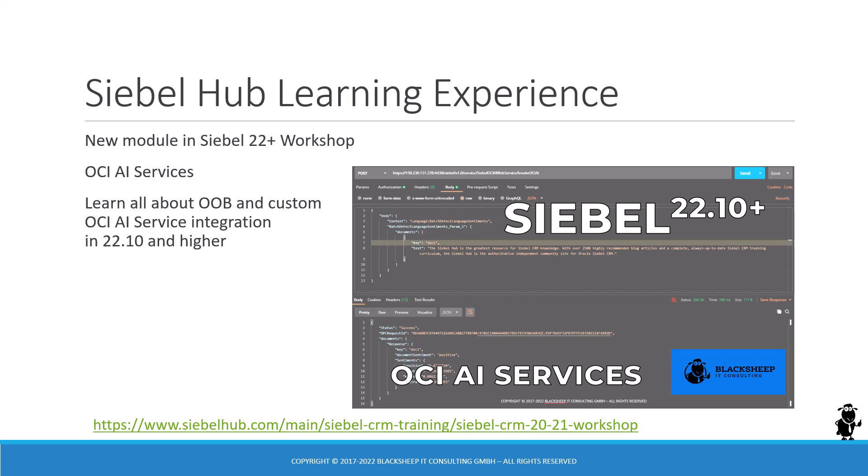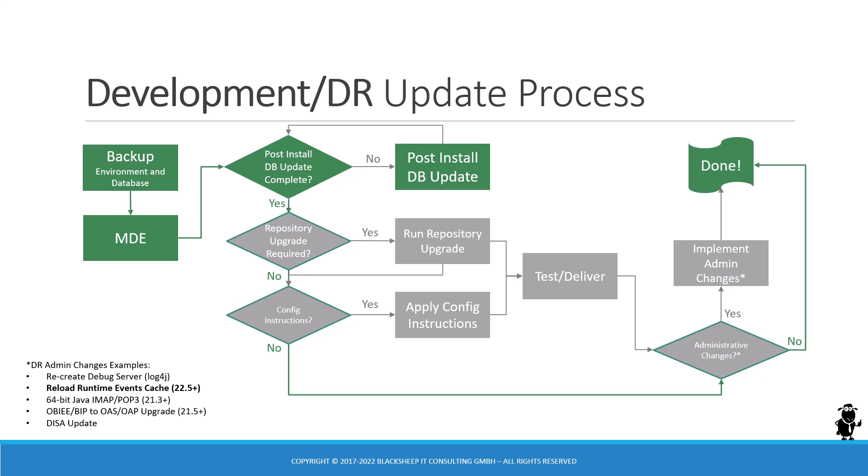Let's take a moment to discuss how to get to the latest Siebel CRM release — 22.10. Whatever release IP 17 and higher you are on, you have to run the update process for all your environments. Let's start with the development or DR environment. Take a backup of the environment and database, make sure everything is stopped, then run the MDE installer, which includes the option to run the post-install database update automatically. You must make sure that the post-install DB update runs successfully.